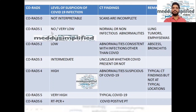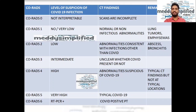CORADS 1 means there is no COVID-19 or very low suspicion of COVID-19 in the patient. A normal or a non-infectious abnormality in the lungs is seen — such as lung tumors or emphysema — or the chest CT can simply be a normal CT without any abnormalities.